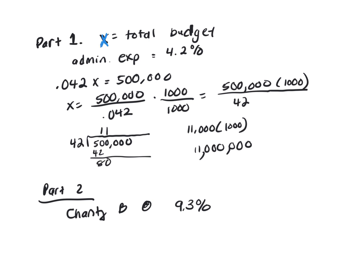Administrative expenses, which is blue, are 4.2%. So 0.042 times the total budget will be $500,000. They give me that number and I'm trying to figure out the total budget. So I'm going to solve this equation for X.